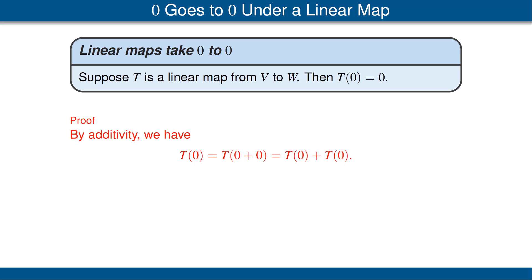Let's look at the proof. We have T(0) is equal to T(0 plus 0), because 0 plus 0 equals 0. Now by the additivity property of T, that's equal to T(0) plus T(0). Now add the additive inverse of T(0) to each side of this equation to conclude that 0 is equal to T(0), as desired.